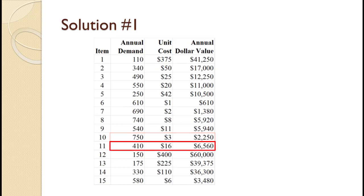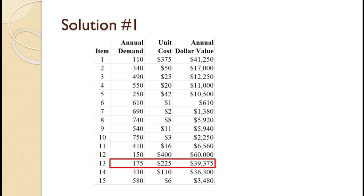For item number eleven, annual demand of 410 times unit cost of $16 equals $6,560. For item number twelve, annual demand of 150 times unit cost of $400 equals $60,000. For item number thirteen, annual demand of 175 times unit cost of $225 equals $39,375. For item number fourteen, annual demand of 330 times unit cost of $110 equals $36,300.